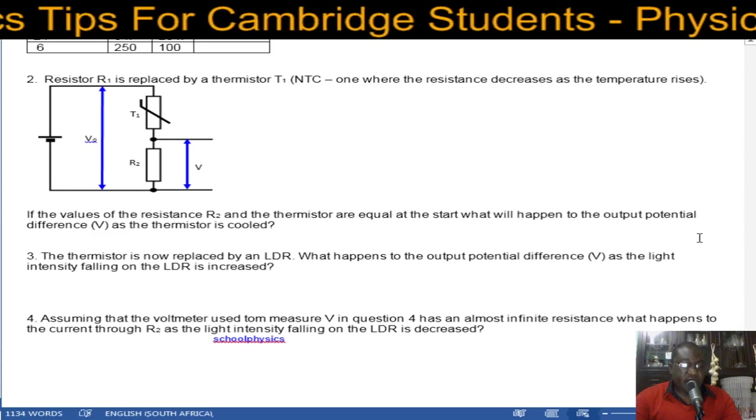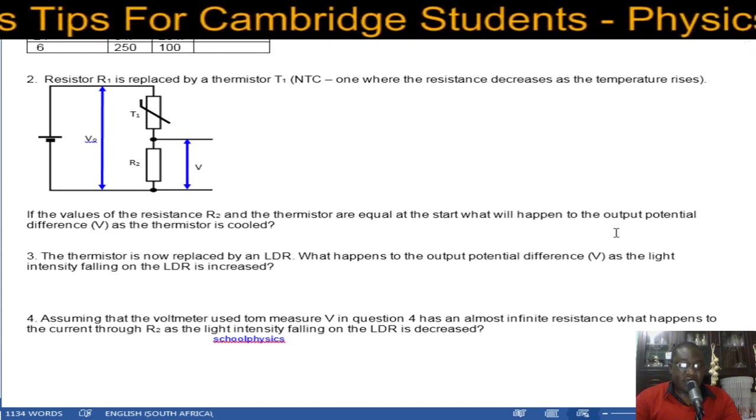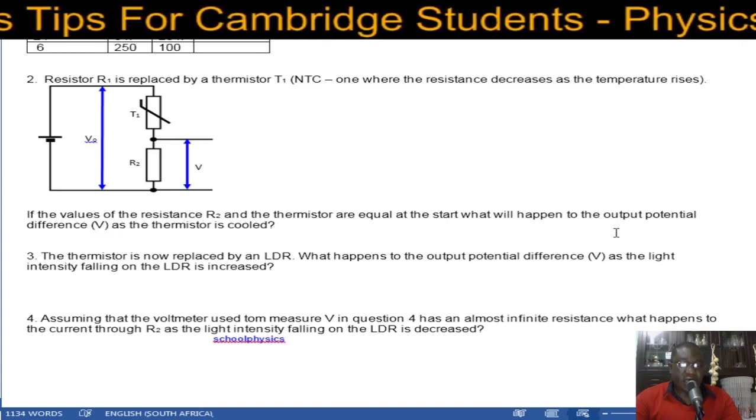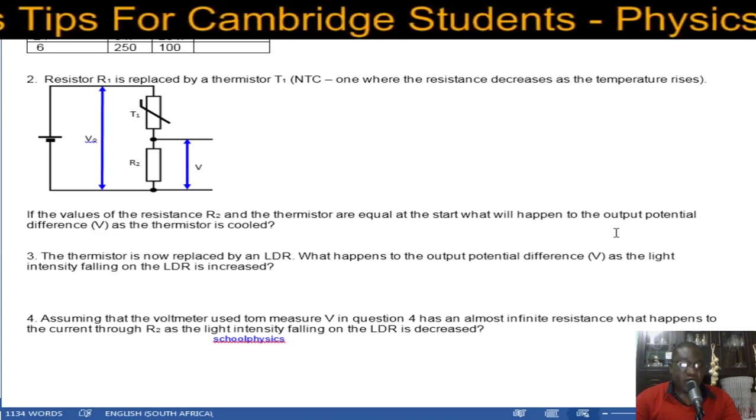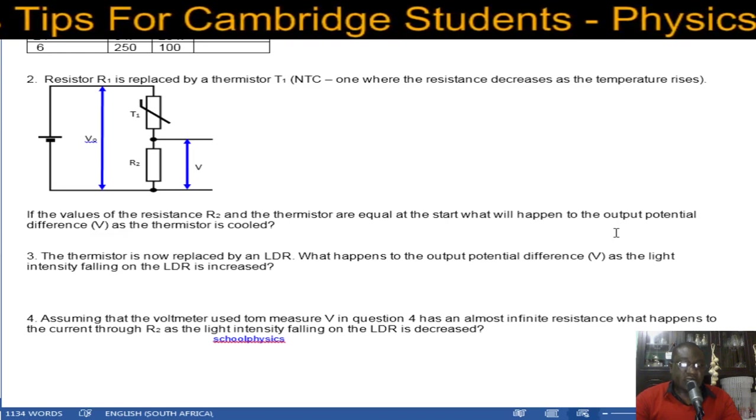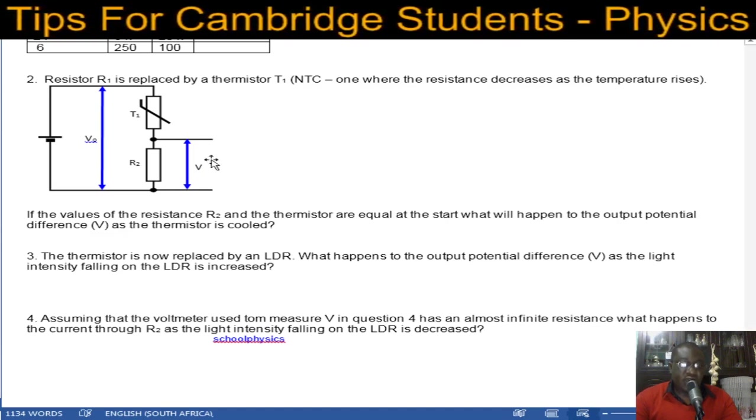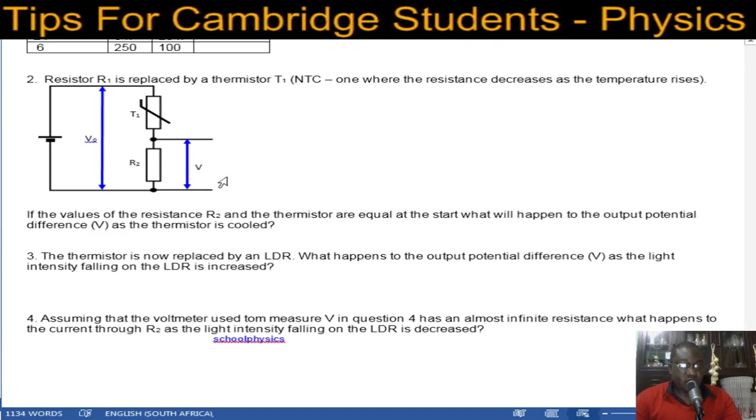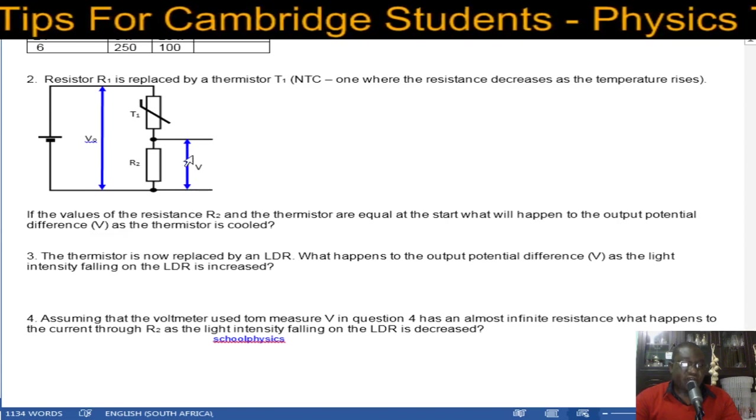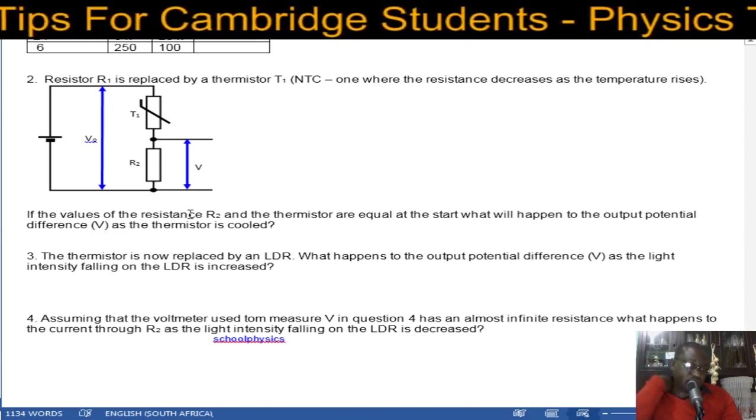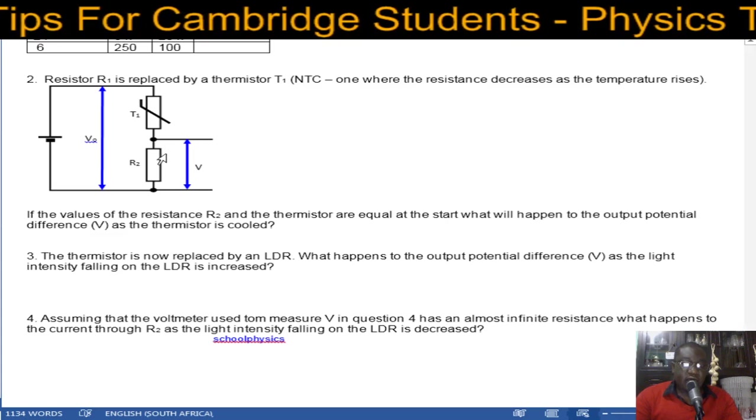The last one says, assuming that the voltmeter used to measure V in question 4 has an almost infinite resistance, what happens to the current through R2 as the light intensity falling on the LDR is increased. We want to connect a voltmeter here. If you have an infinite resistance of the voltmeter, it means that it does not draw any current to itself.